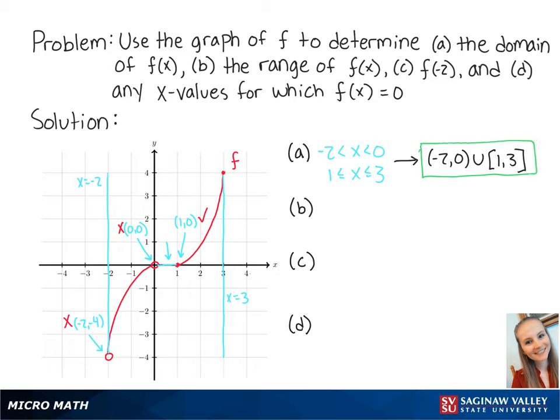For letter b, the range of f of x is the set of all y values within the function. Looking at the graph, we can see that the smallest value of y is negative 4 and the highest value of y is positive 4. Again, we cannot include the point where y is equal to negative 4 because that does not exist. This means y is between negative 4 exclusive and 4 inclusive.